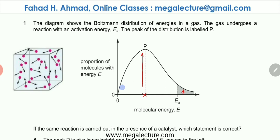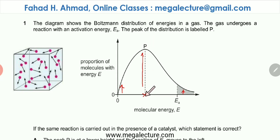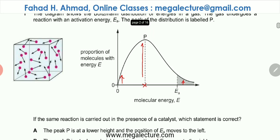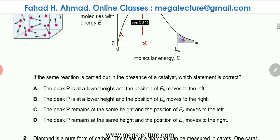The number of particles having very low energies is also going to be fewer, so most of the particles would have energies close to this average energy. The peak of the distribution is labeled P, meaning most of the particles have this particular energy. Now the question is: if the same reaction is carried out in the presence of a catalyst, which statement is correct?